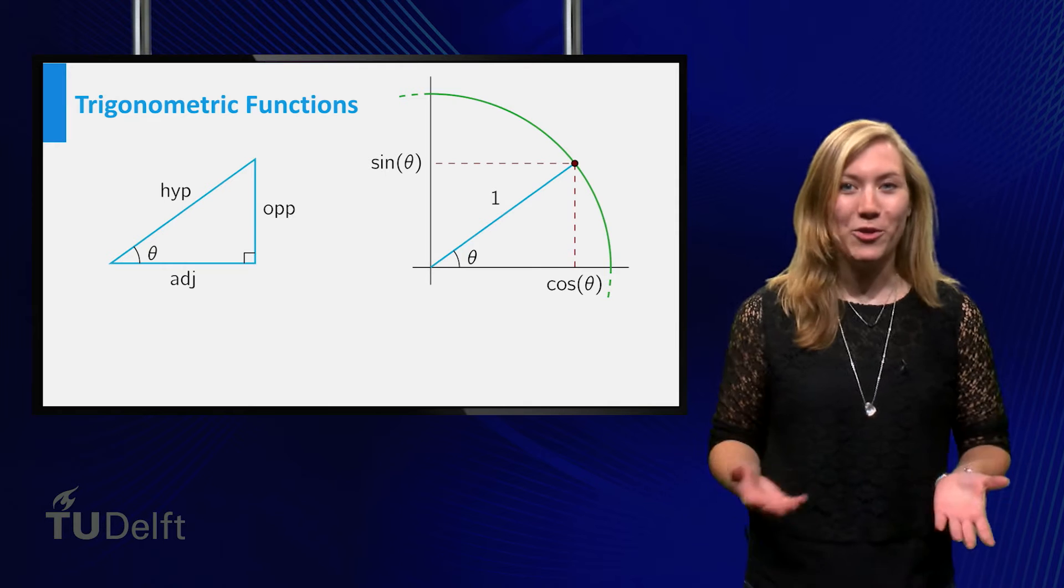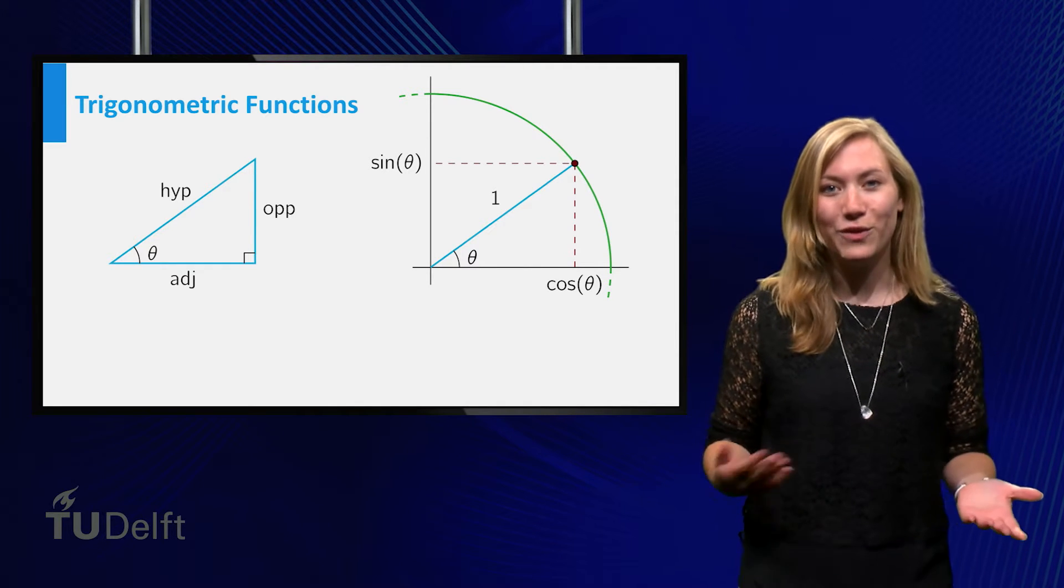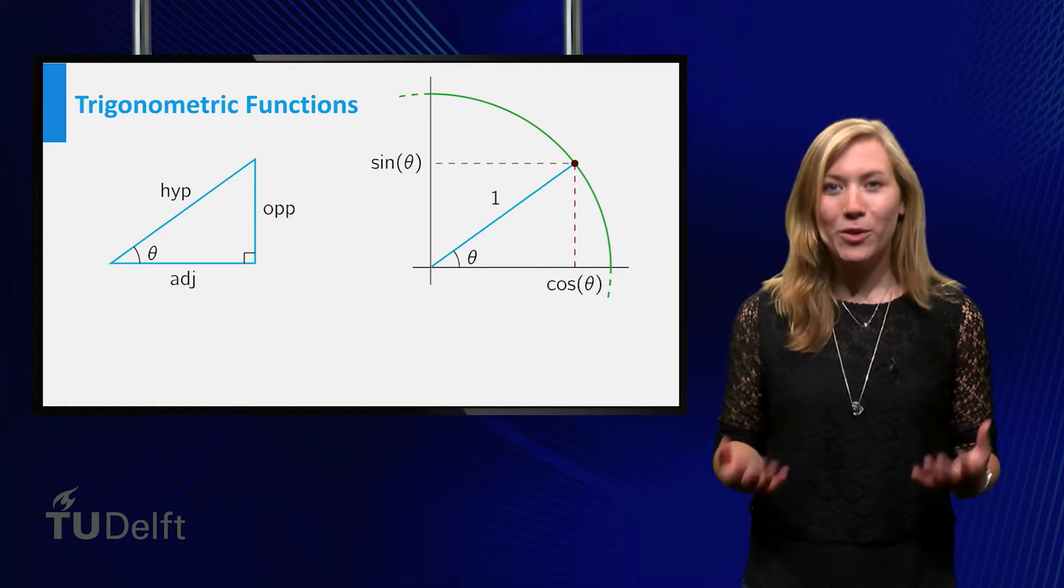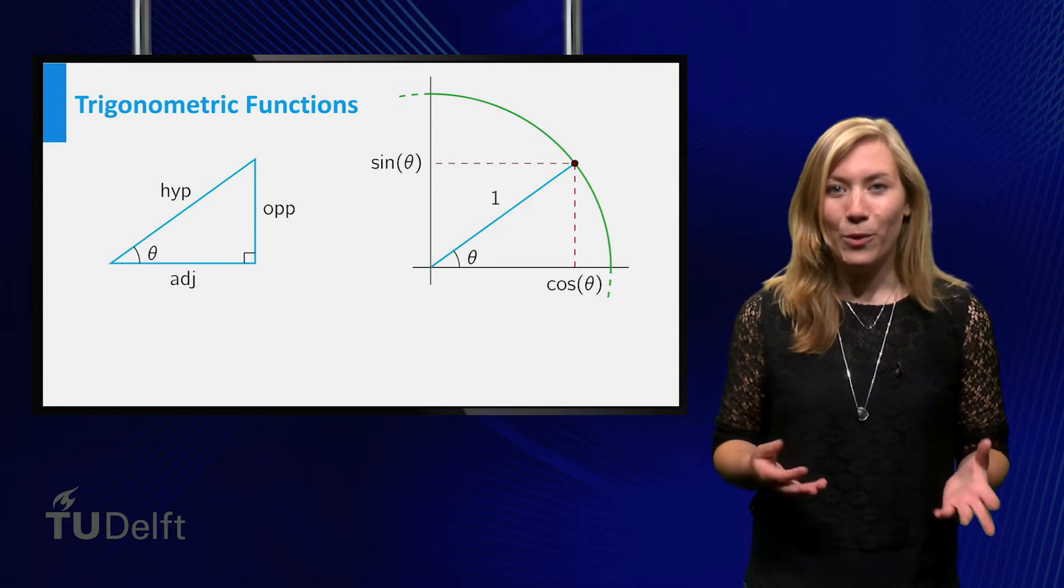We first looked at trigonometric functions, that is, the sine, cosine and tangent function. There are two basic ways to define the trigonometric functions, by looking at a right-angled triangle and by looking at the unit circle.